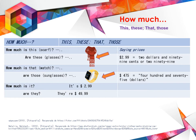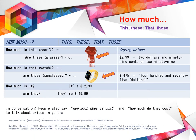Hay dos formas de decir los precios. Podemos decir $2.99 o simplemente los números. Para el siguiente precio tendremos $4.75 o $4.99. In conversation, en conversaciones reales, people also say — la gente también dice — how much does it cost? And how much do they cost? To talk about prices in general, para hablar de precios en general.